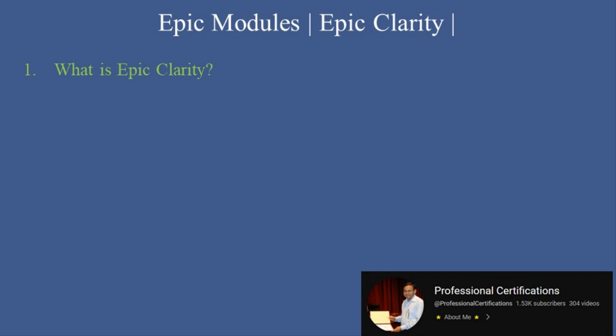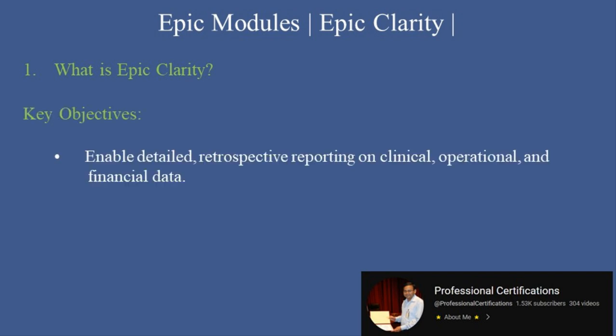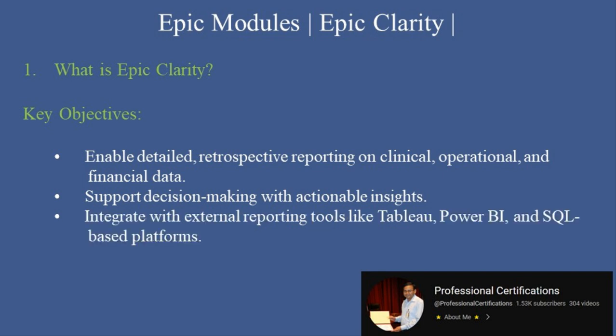What is Epic Clarity? Epic Clarity is Epic's relational database used for advanced reporting and analytics. It extracts data from Epic's operational database, Chronicles, and transforms it into a structured format for reporting tools and analytics platforms. Key objectives include enabling detailed retrospective reporting on clinical, operational, and financial data; supporting decision-making with actionable insights; and integrating with external reporting tools like Tableau, Power BI, and SQL-based platforms.